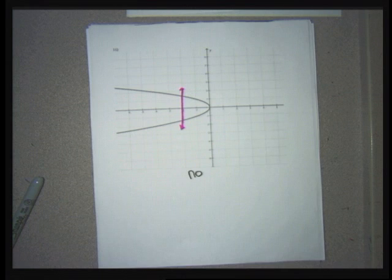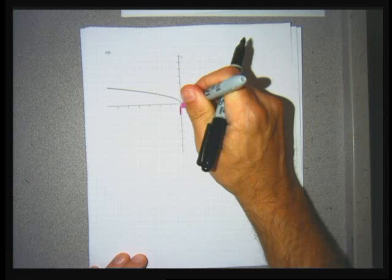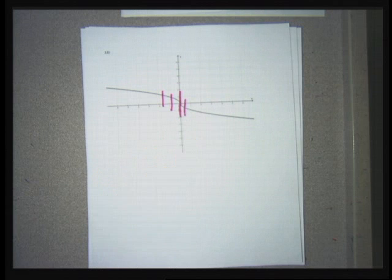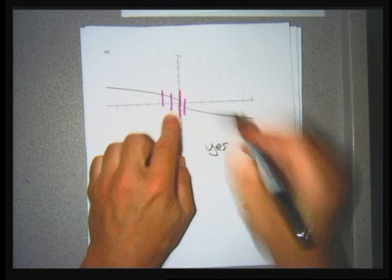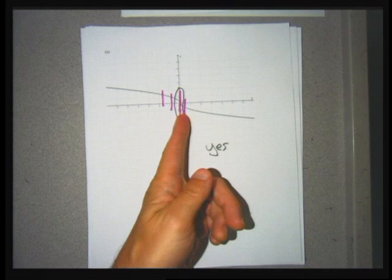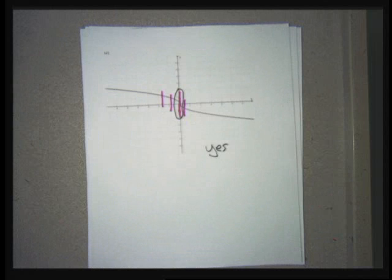For problem 12, there may be some confusion about what's happening at the origin. Even at the origin, the vertical line you draw is only supposed to touch the graph in one place — this answer is supposed to be yes. Around the origin it might look like the line touches more than once; I wouldn't put a problem like this on a test because of that ambiguity. If you took intermediate algebra, you might recognize these problems — I cut and pasted them from that class.